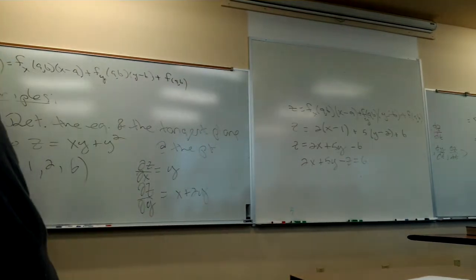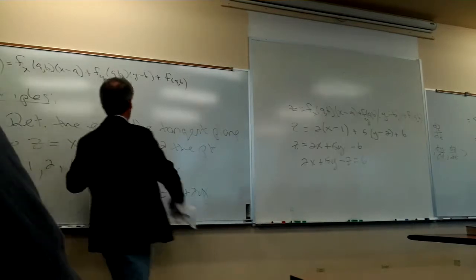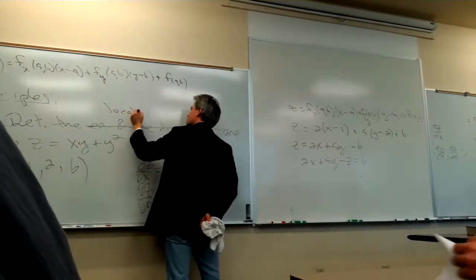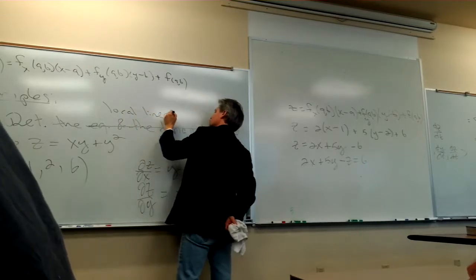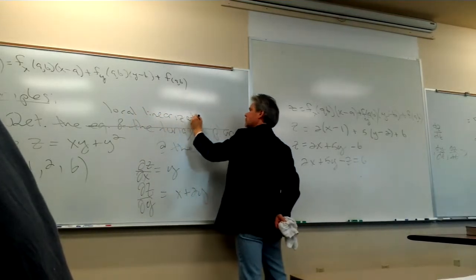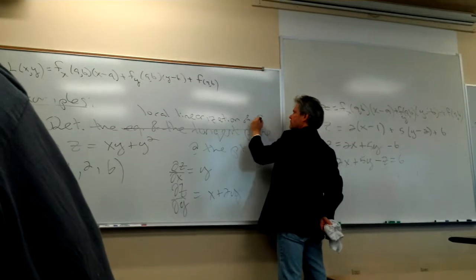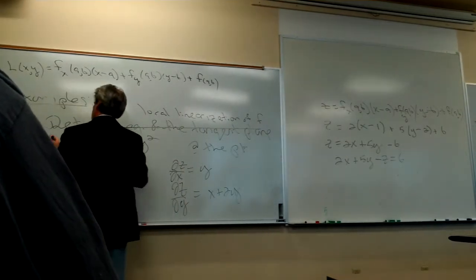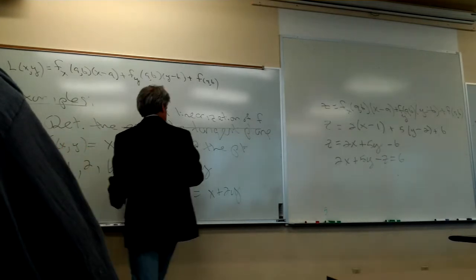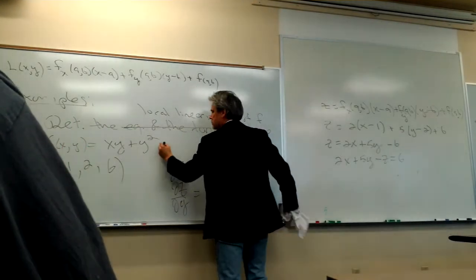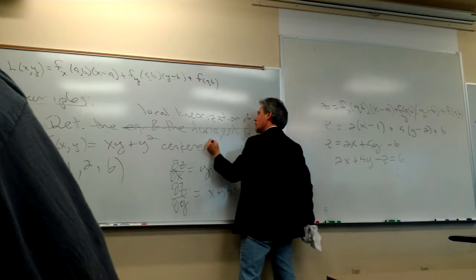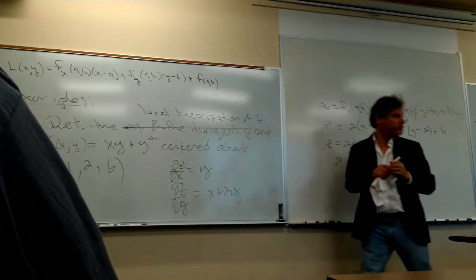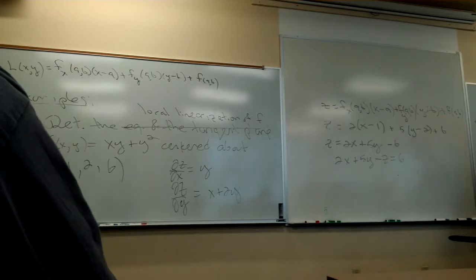And so let me change my question. So two, determine the local linearization of F. If F of X, Y is equal to junk, standard amount without point P. I'll wait for you guys to get caught on it.